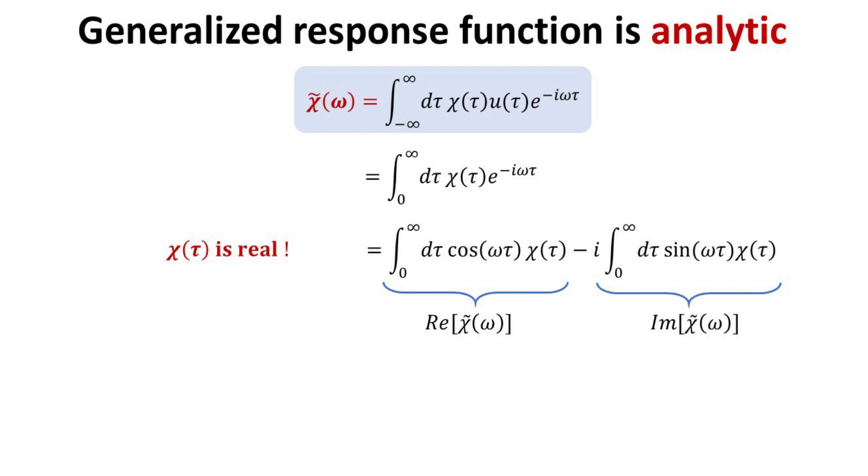As such, the two integrals are purely real and can be associated with the real and imaginary part of the generalized response function. Due to their cosine and sine dependence, the real and imaginary part are even and odd functions with respect to omega, respectively.